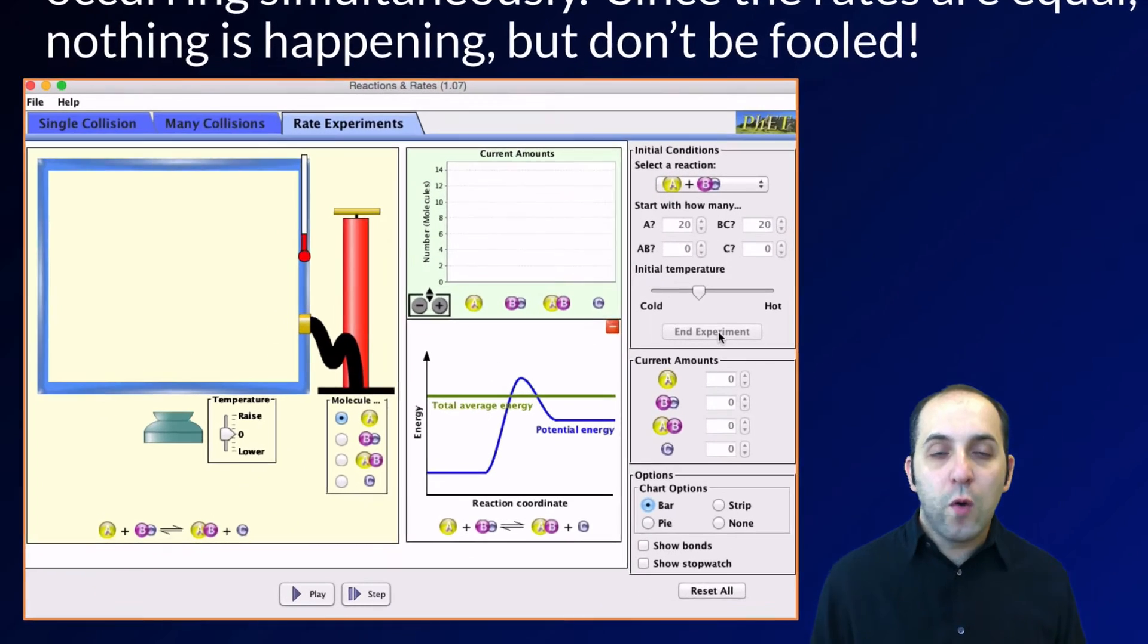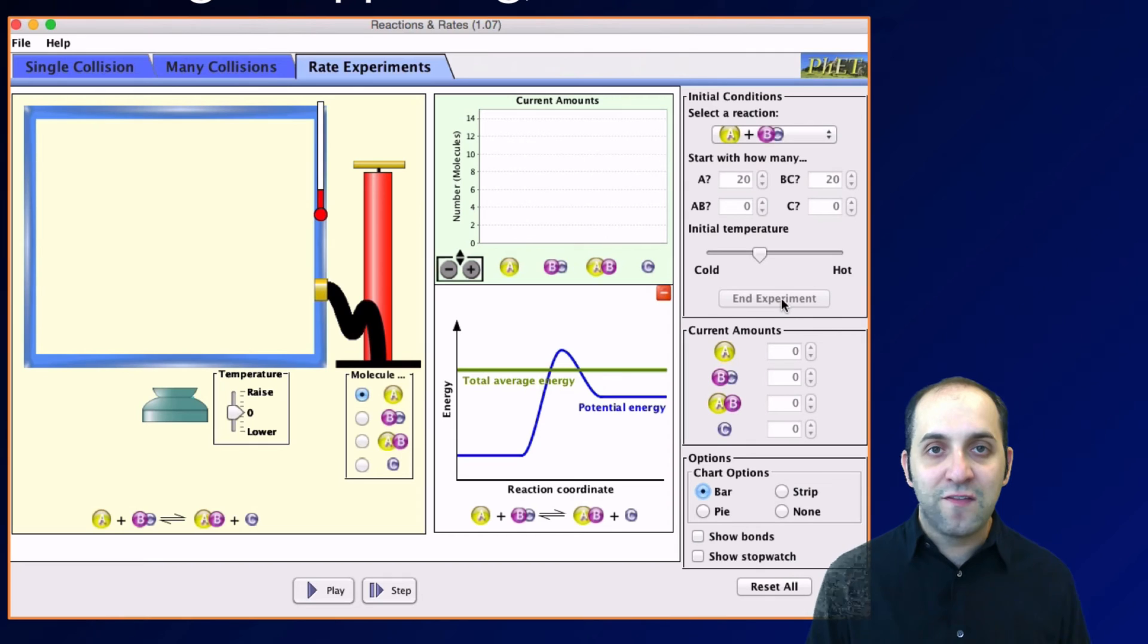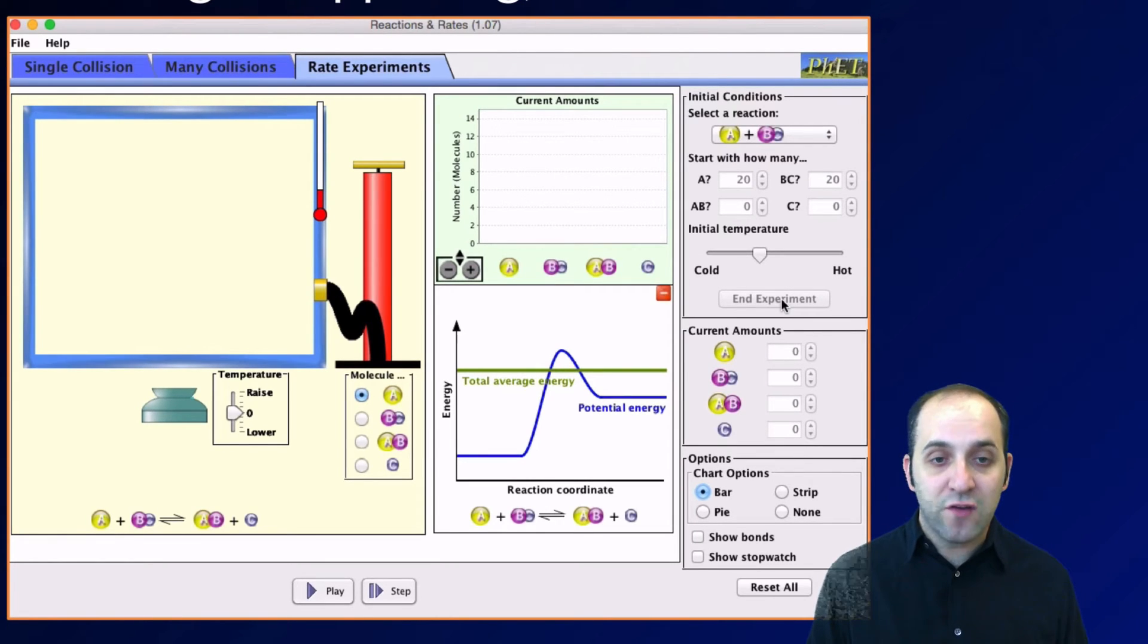This simulation is going to get at this point. We're going to set up a situation in this simulation where we have 20 molecule A's and 20 molecule B's simultaneously in this reaction chamber. We've got a graph that shows the current amounts of each substance, and we've also got a diagram that shows that we put in more energy than we need in order to get both the forward and reverse reactions to occur.